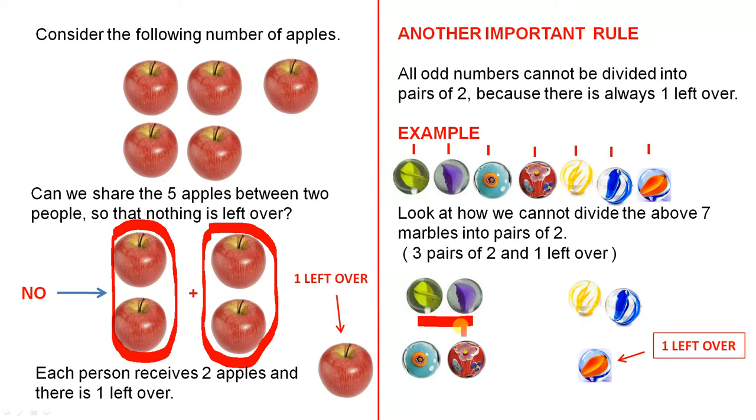There is one pair, two pairs, three pairs - that gives you six altogether, but there is one left over. So there are three pairs of two and one left over. Because there is one left over, seven is odd.